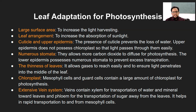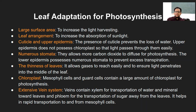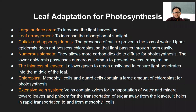Leaf arrangement is another adaptation to absorb maximum sunlight. Leaves are usually arranged at different axes on a particular stem — not one below the other — so the plant arranges them to absorb maximum sunlight. The presence of cuticle or upper epidermis: the waxy layer prevents water loss, so more water is retained within the plant and can be utilized for photosynthesis. The upper epidermis does not possess chloroplast, so that light passes through easily.